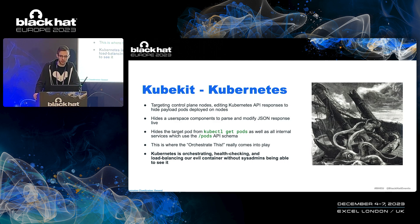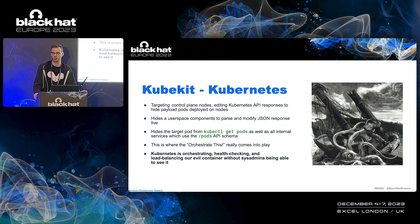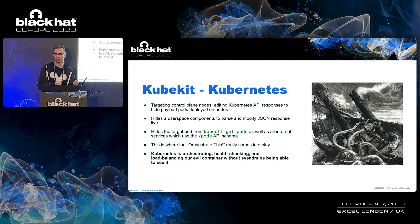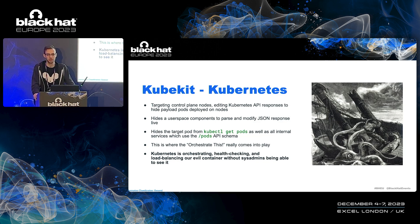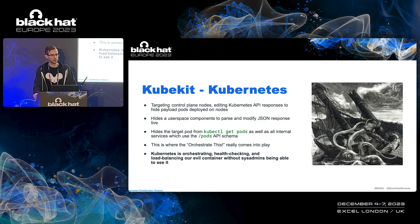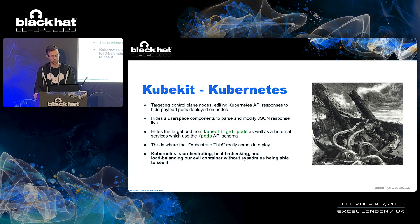For the Kubernetes flavor, we're targeting the control planes. Each one has an API server that will manage watching all the containers and synchronize container lists running on pods between nodes. We want to hide our pods not just on one node from kubectl, but from all API requests so that other control nodes have no idea what malicious payload is running. We have a user space app that modifies the JSON responses — we're hooking into the pre-TLS response sending function within Kubernetes — so the control plane will deploy our payloads and then lose any recognition after it's already orchestrated and load balanced the malicious pod.